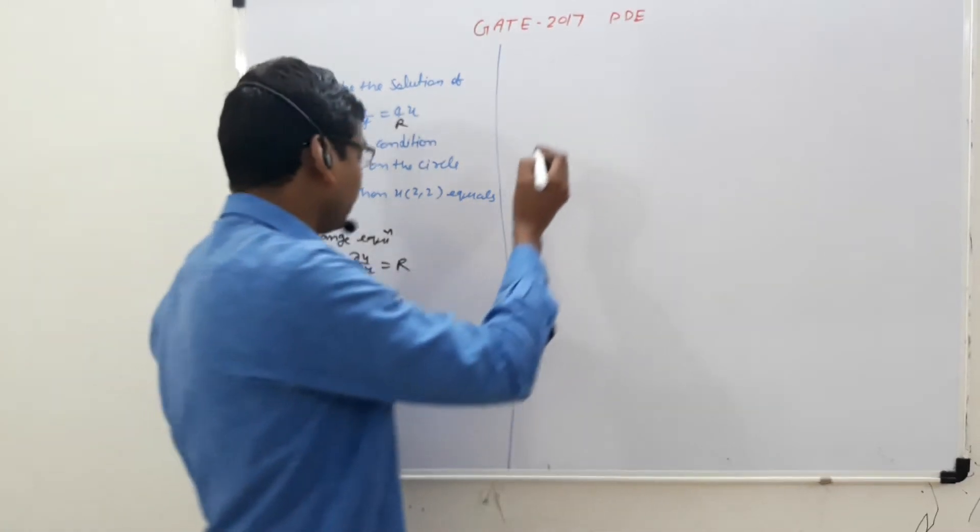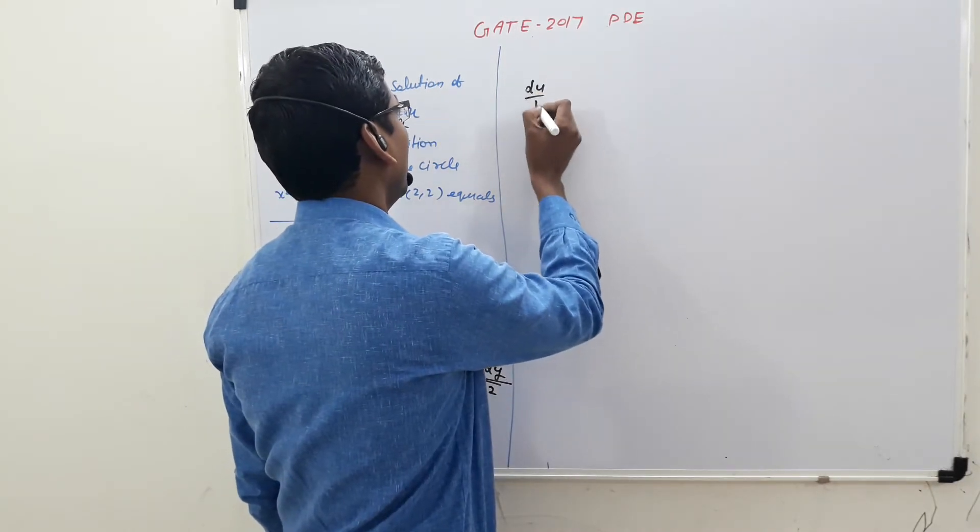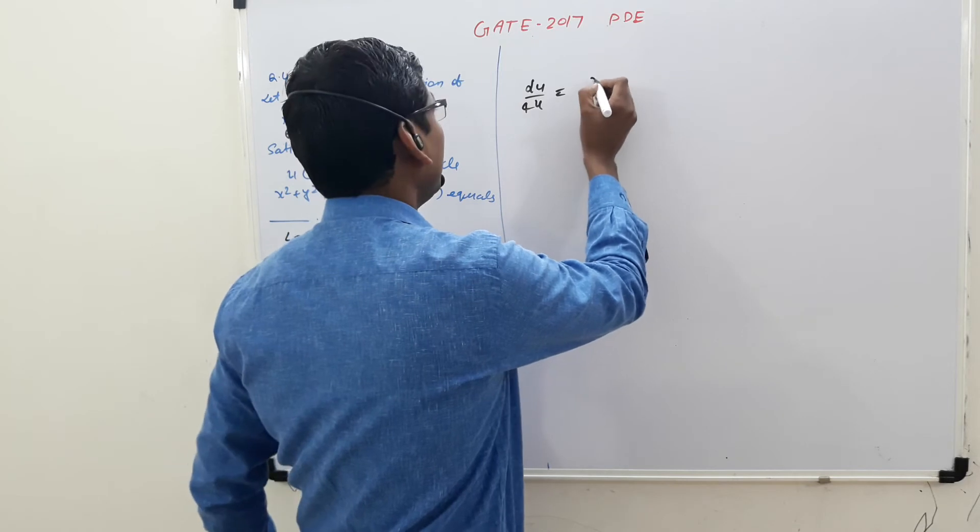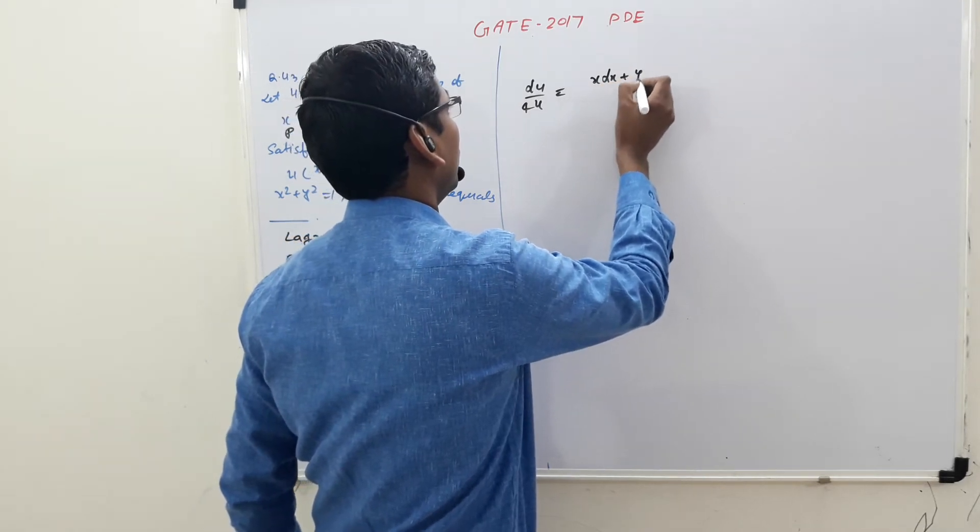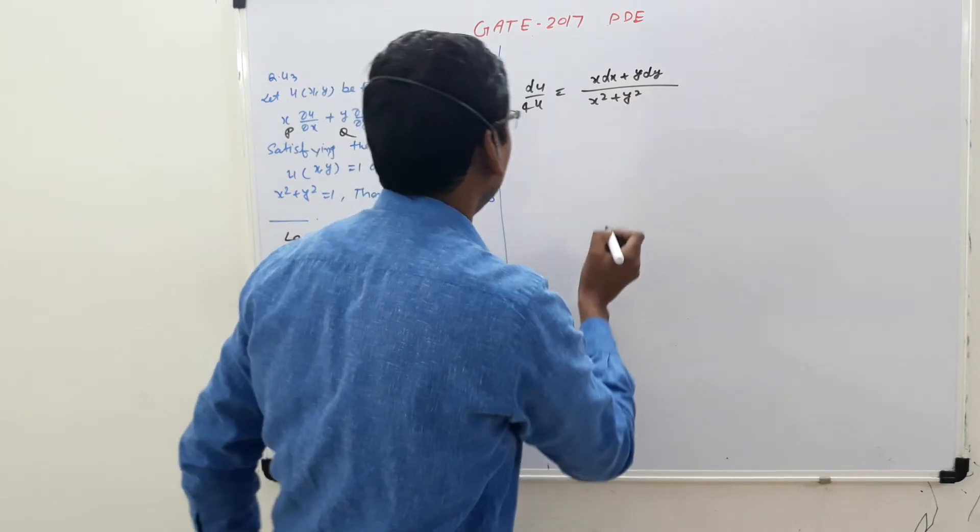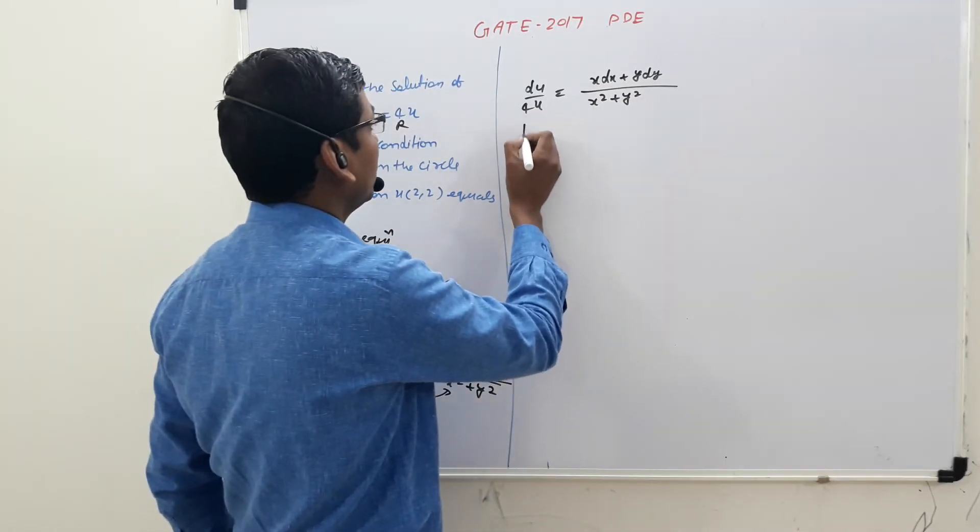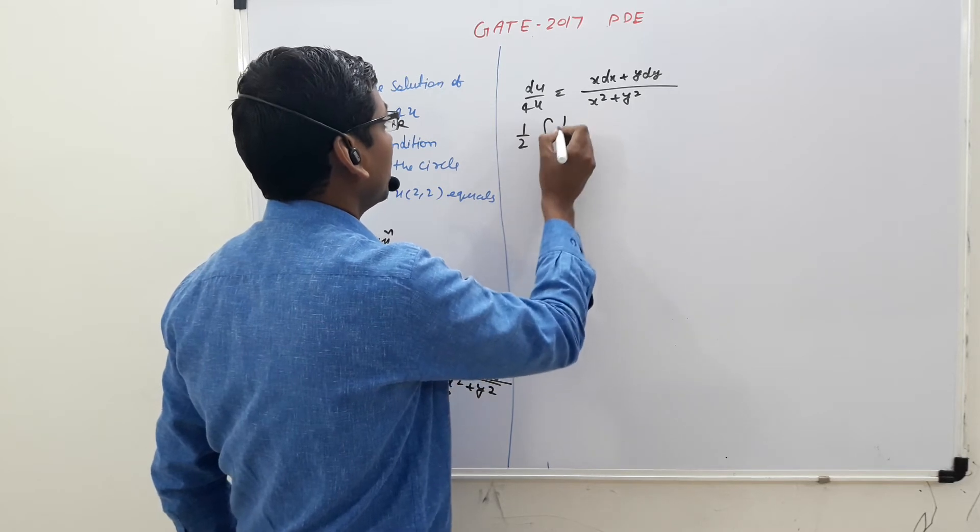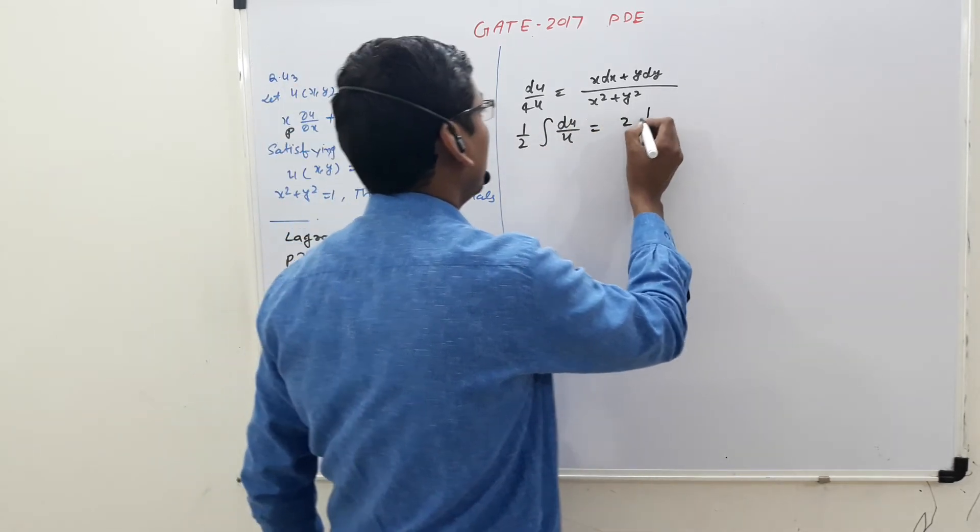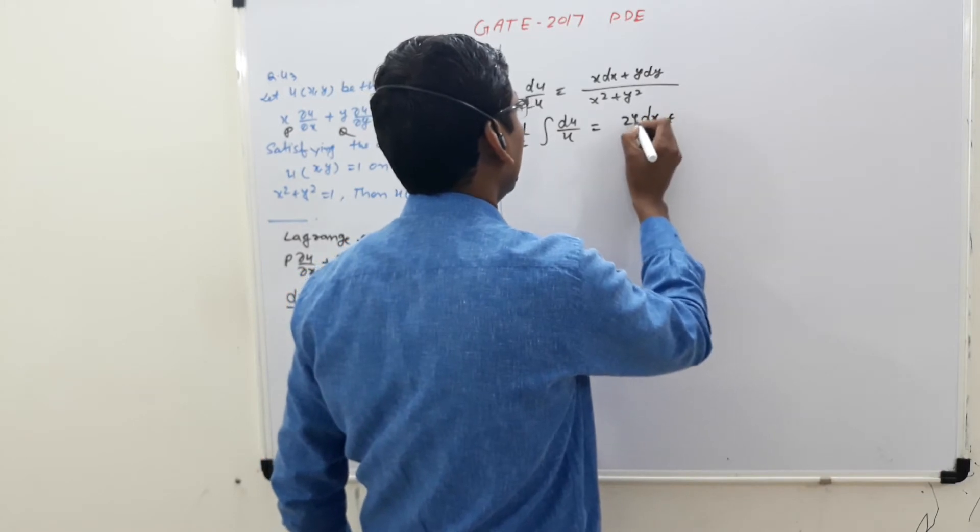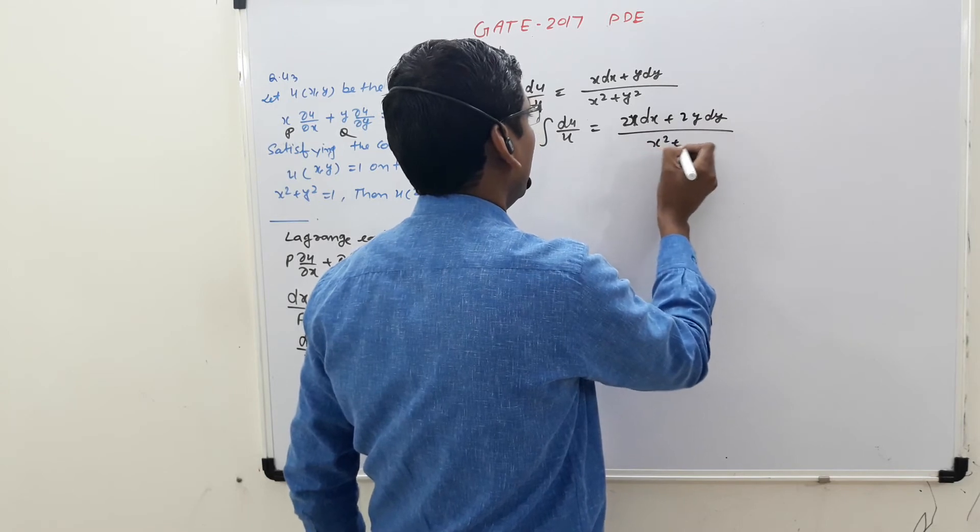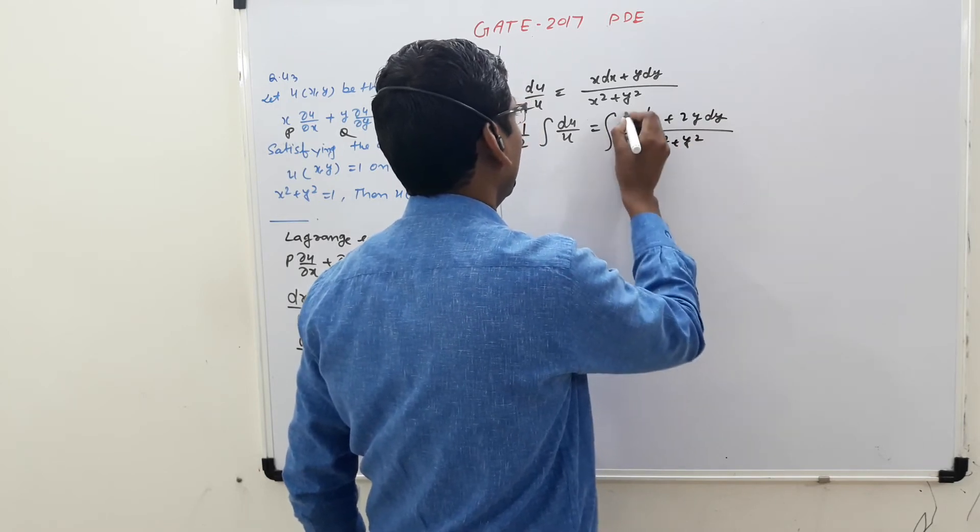So now, du/u = (4u·x·dx + y·dy). This is x·dx + y·dy = (x^2 + y^2). Now integrating this: du/u, 2x·dx, 2y·dy, 1/(x^2 + y^2), that is under roots.